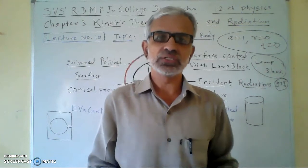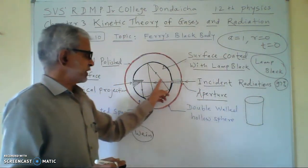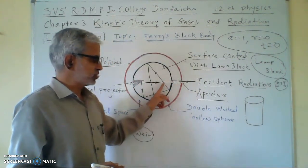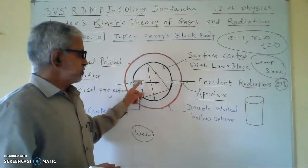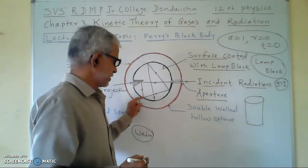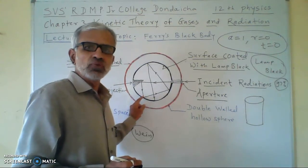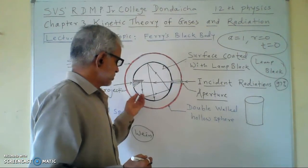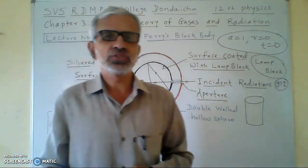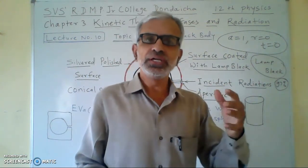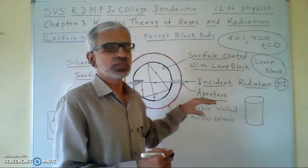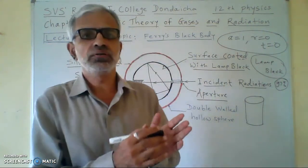Now let us see how it works. When heat radiations enter from the aperture, they are incident on the conical projection. The lamp black coating absorbs 97% of the heat and only about 3% — a very small quantity — is reflected. This reflected radiation is again incident on the lamp black inner surface, which again absorbs 97% of it. After a few such reflections, all the heat radiation is absorbed by the body, so the sphere functions as a black body.